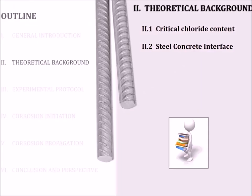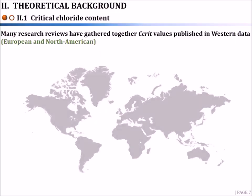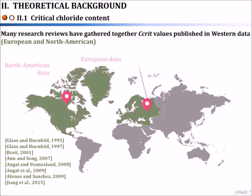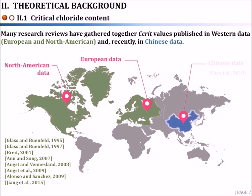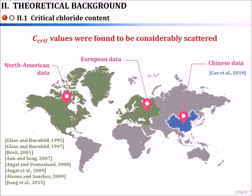Before proceeding, let's take a quick look at critical chloride contents in literature. Many research reviews have gathered Ccrit values published in European and North American data, and a large number of Chinese publications have also been evaluated recently. From all these reported data, it was found that Ccrit values were considerably scattered. The key question is: why do we have all this scatter?